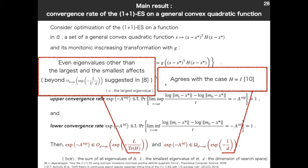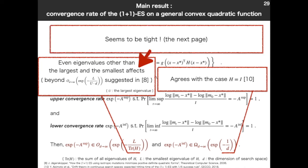Obviously, there is a gap. So, cannot we match them? We consider we can. It seems to be tight experimentally as we see in the next page.